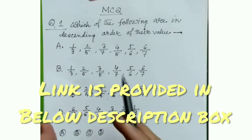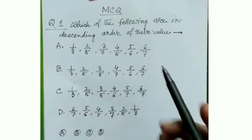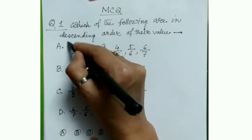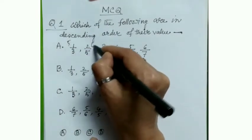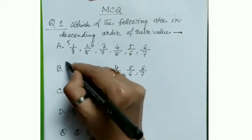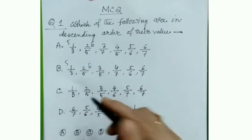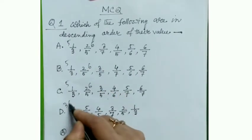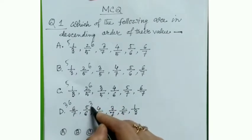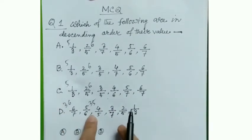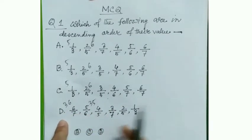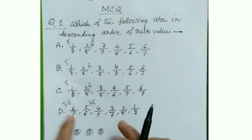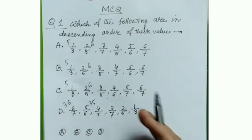Start counting the time. Descending means big to small. Comparing the first option: 5×1=5, 3×2=6 — small then big, so not descending. Checking the next: 5×1=5, 3×2=6 — small then big. Then 6×6=36, 7×5=35 — big then small. So the first option that is descending is option D, which is the correct answer.